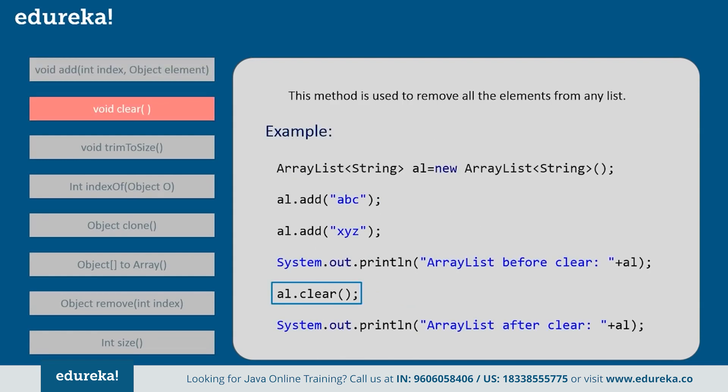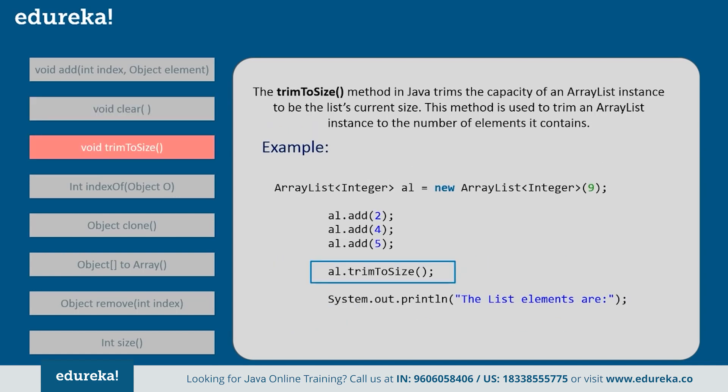Next is the clear method — this method is used to remove all elements from the list. You simply call clear() to remove all elements present in the list. Next is trimToSize() — this method trims the capacity of an ArrayList instance to the list's current size. For example, if you create an ArrayList of size 9 but only add three elements, calling trimToSize() reduces the ArrayList size from 9 to 3.